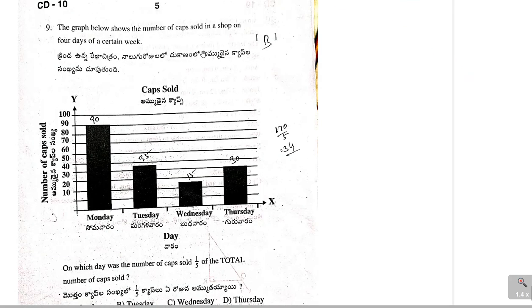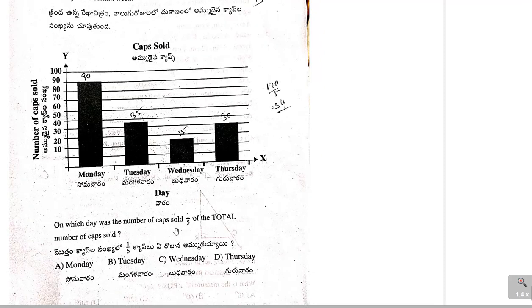Next, the graph below shows the number of caps sold in a shop on 4 days of a certain week. On what day was the number of caps sold 1 by 5 or 1 fifth of the total number of caps sold? First of all, let us find out the total number of caps on each day. Monday, it is 90. Tuesday, it is in between 30 and 40. It may be, let us take that one as 35. Here, Wednesday, it is in between 10 and 20. So, let us take this one as 15. And then, Thursday, let us take that one as 30.